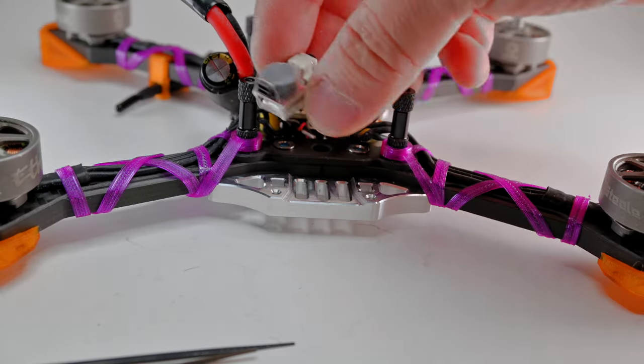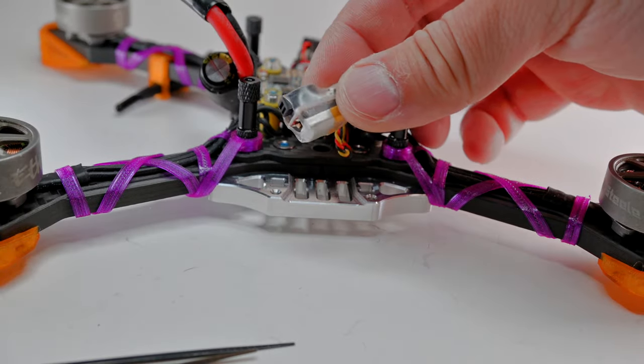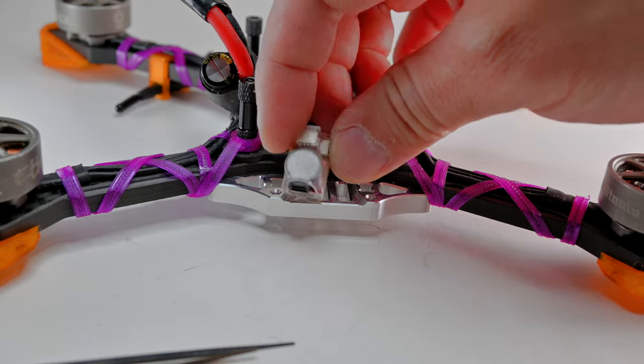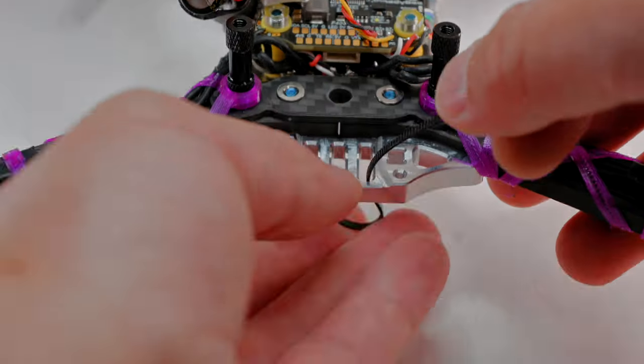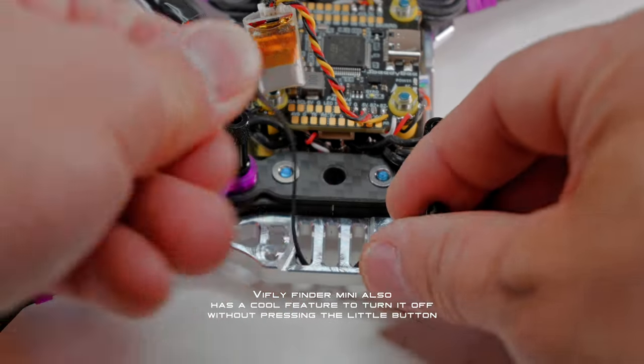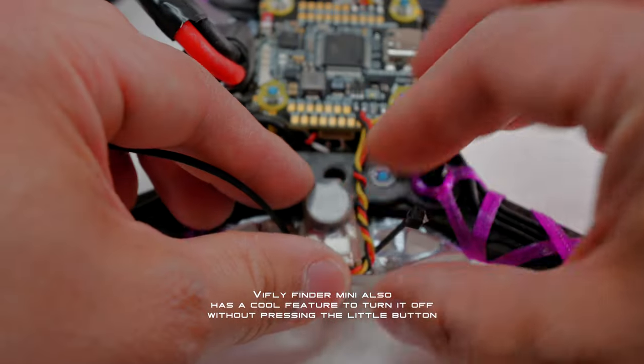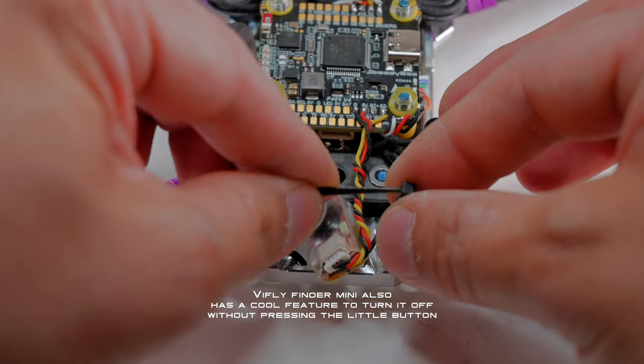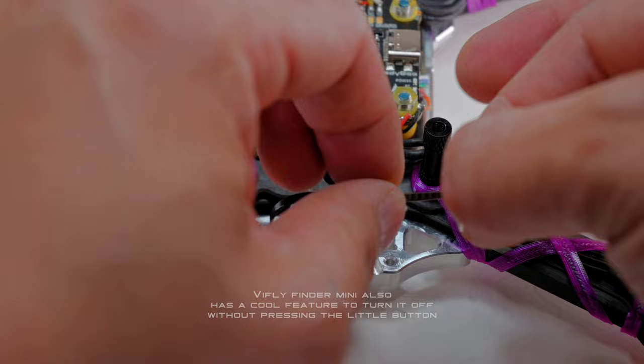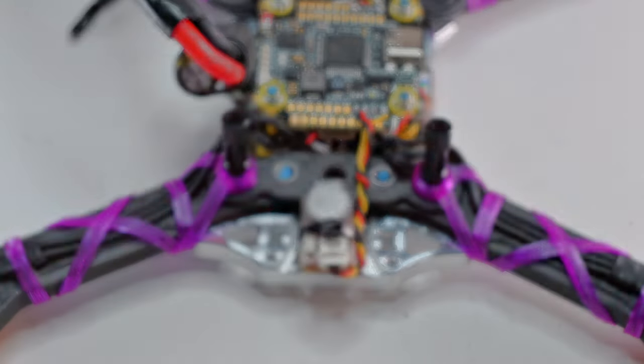So the buzzer I'm using is a V-Fly Mini. I like it because it's very compact, very light, and it also has an LED light on it. I mean, it's not the loudest, but it fits this frame really well. So I like to install it in the front grill. Just stick a zip tie in the zip tie zone and just put her in there. So when you install it, just make sure the wires don't get pinched by the camera plates.